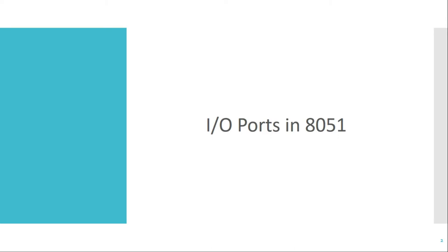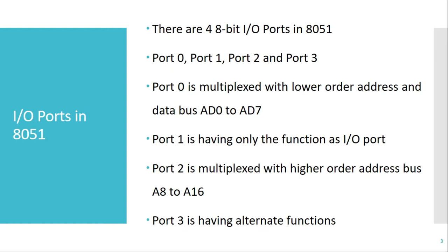In this video, we will see the I/O ports present in 8051. There are 4 eight-bit I/O ports available in 8051, named as Port 0, Port 1, Port 2, and Port 3. These ports are used for interfacing external devices to 8051. Using these digital ports, we can send data from the CPU to an external peripheral or take data from an external peripheral to the CPU.